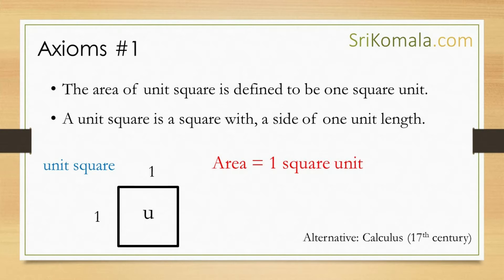Axiom number 1: the area of a unit square is defined to be 1 square unit. A unit square is a square with a side of 1 unit length, as shown in the figure.